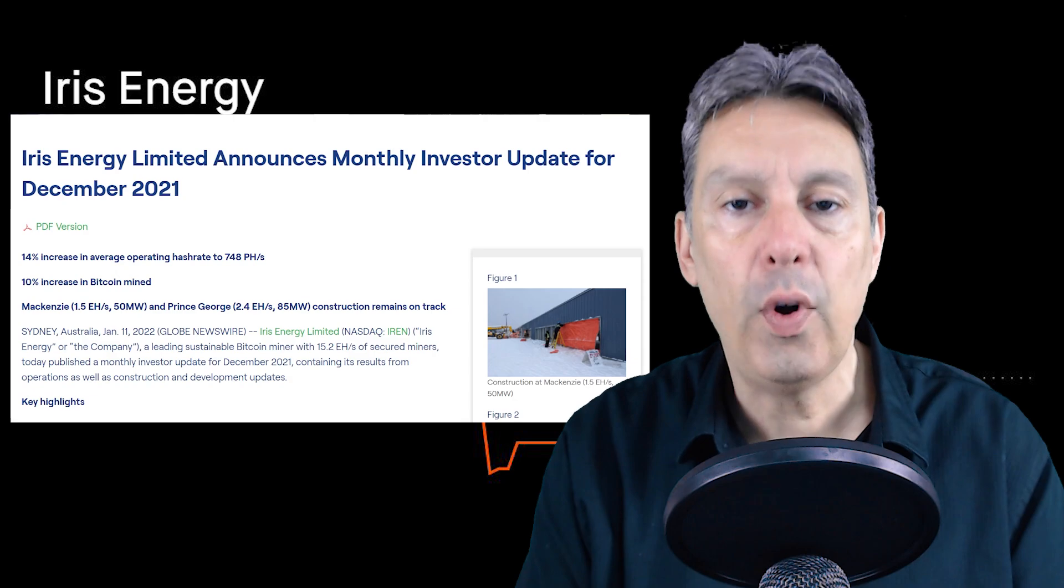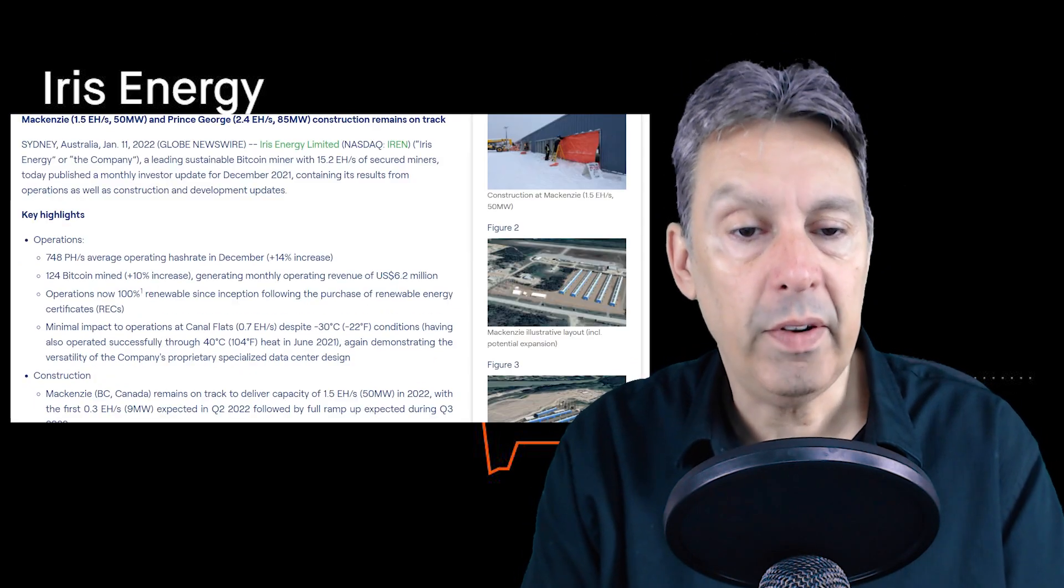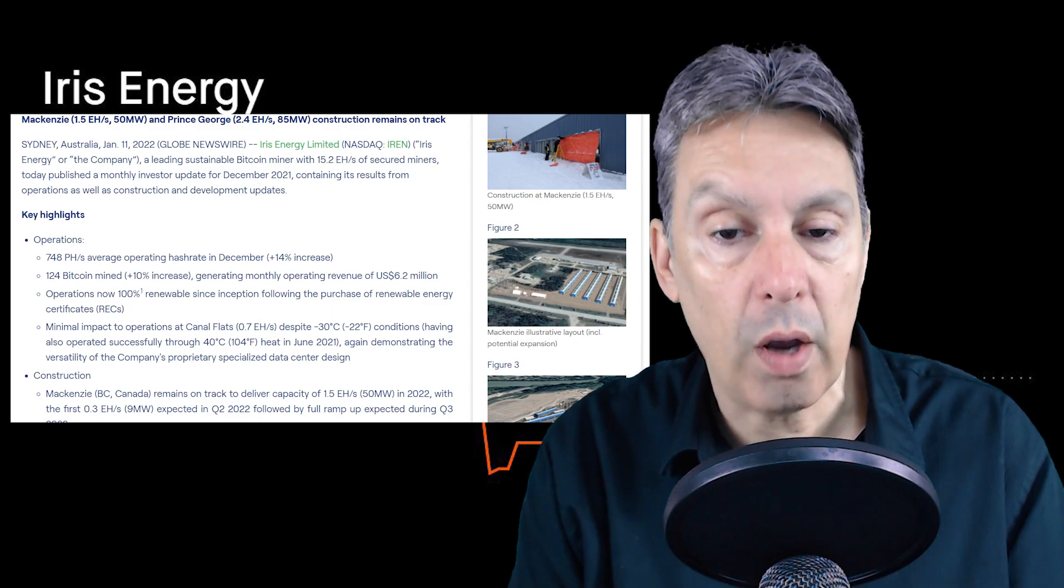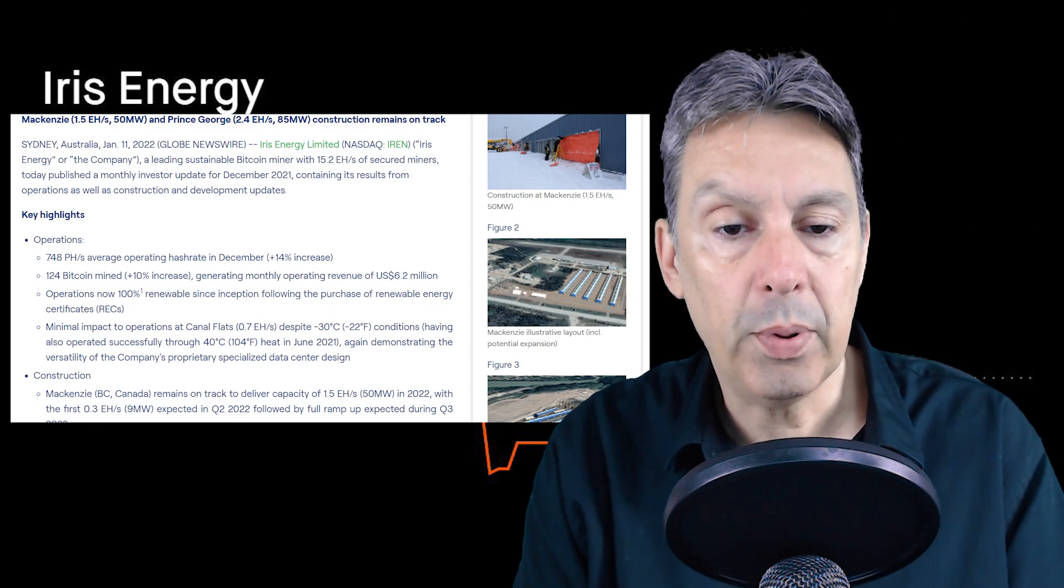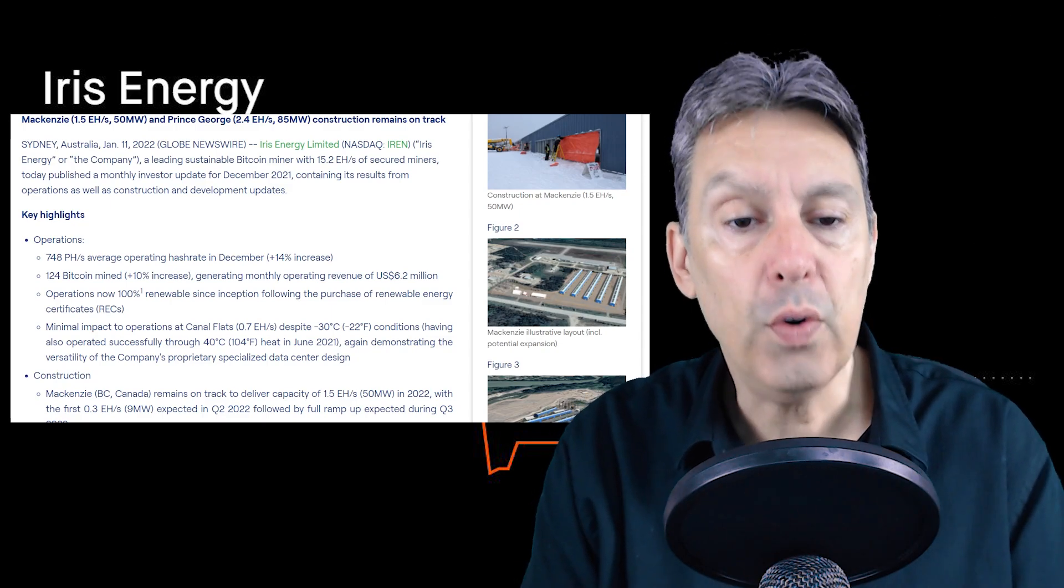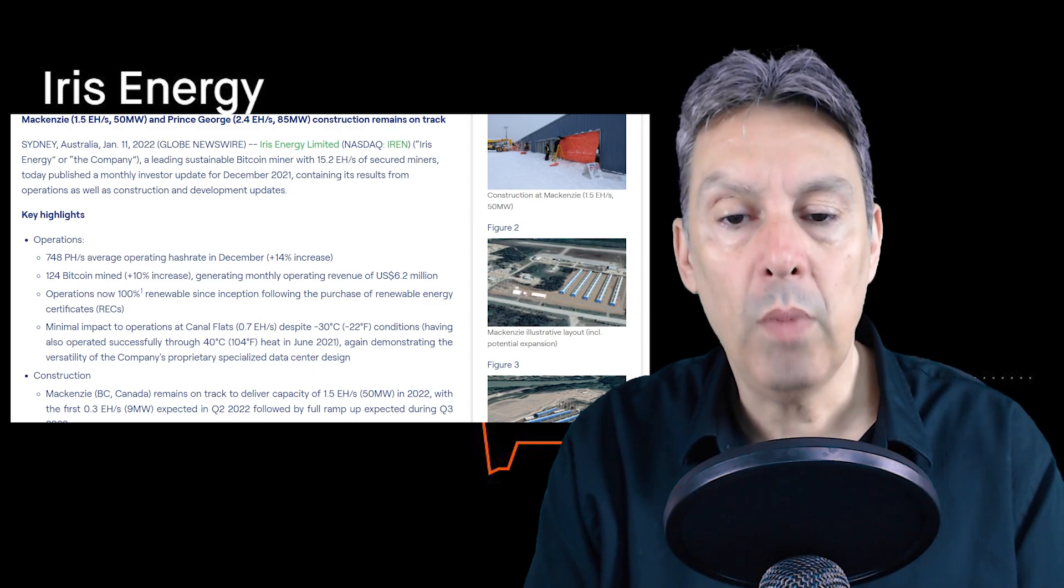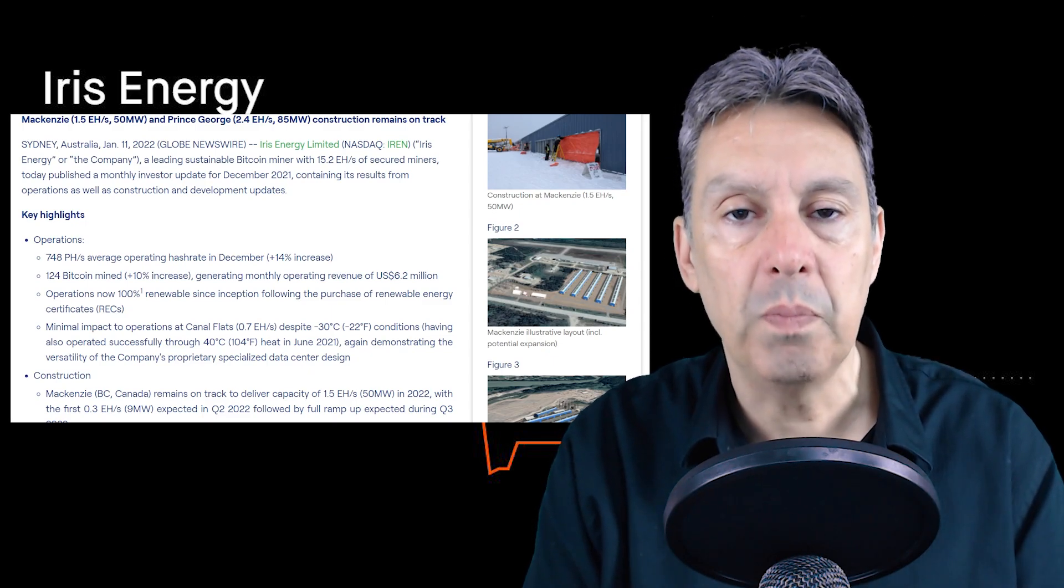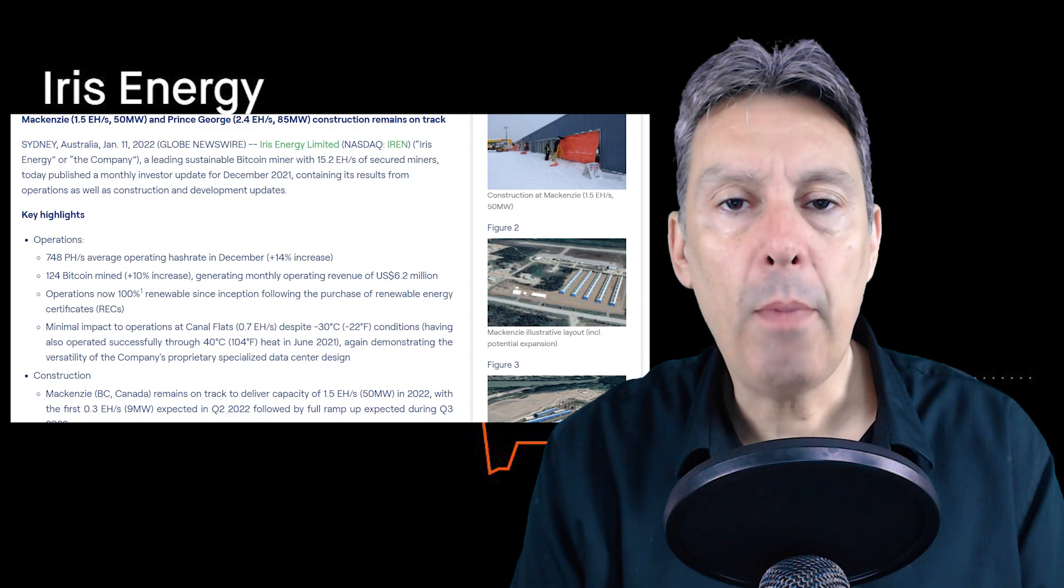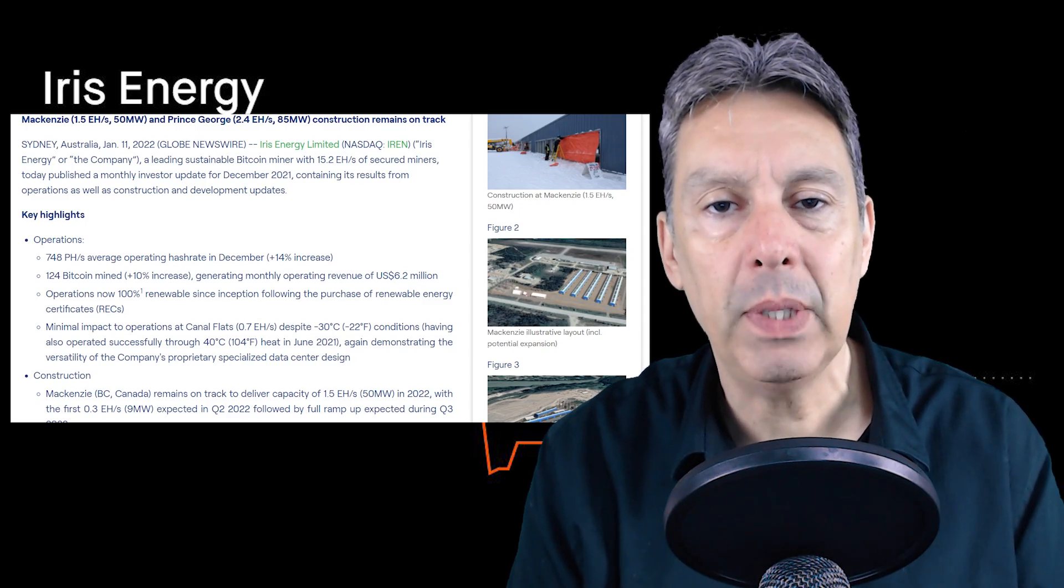Key highlights: 748 petahash per second. We talked about that. That's a 14% increase, looks like month over month from the previous month. 124 bitcoin mined. That's a 10% increase, generating monthly operating revenue of $6 million. You can see that most of the miners we cover are somewhere between 200 and, I believe Marathon had 482, which was the record for any company in the year 2021.